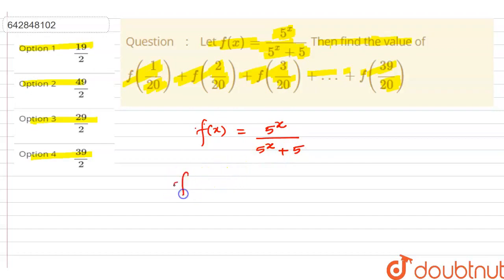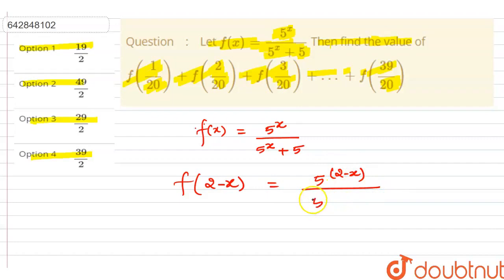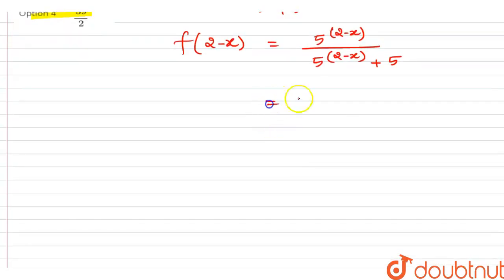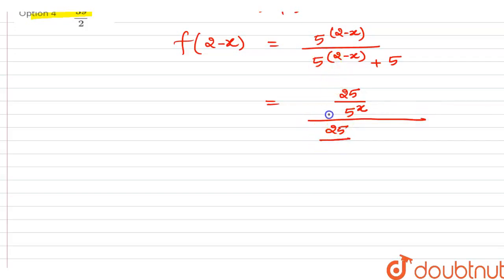Now we can simplify f(2 − x). This will be: 5 raised to power (2 − x), in the numerator. We can simplify this — 5 raised to power 2 is 25. So in the numerator we have 25 times 5 raised to power (−x), which equals 25 divided by 5 raised to power x. In the denominator, we similarly have 25 divided by 5 raised to power x, plus 5.